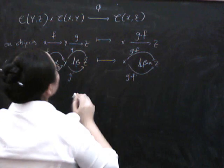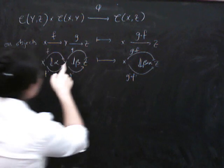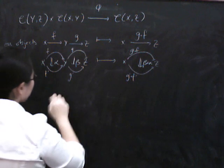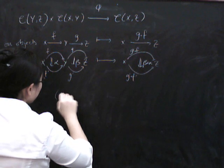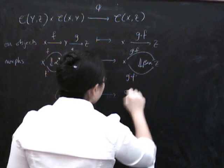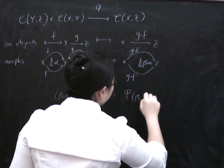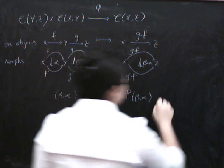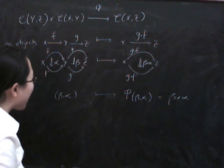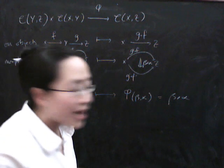So let's call this functor phi. Remember that this is a morphism in this product category, which we could call the pair (beta, alpha). So this gets sent to phi of (beta, alpha), which in fact is what we were previously writing as beta star alpha.